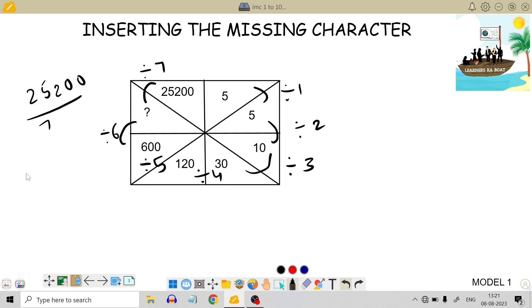7 into 11, 7 3, 21, 4, remainder 42, 7, 6, 42, 00. In question mark place, we have 3600. So, 3600 divided by 6 is 600.